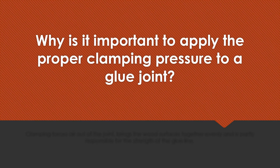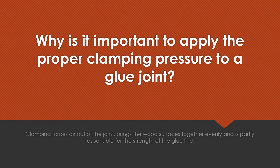Why is it important to apply the proper clamping pressure to a glue joint? Clamping will force the air out of the joint, which brings the wood surfaces together evenly and is partly responsible for the strength of the glue line.